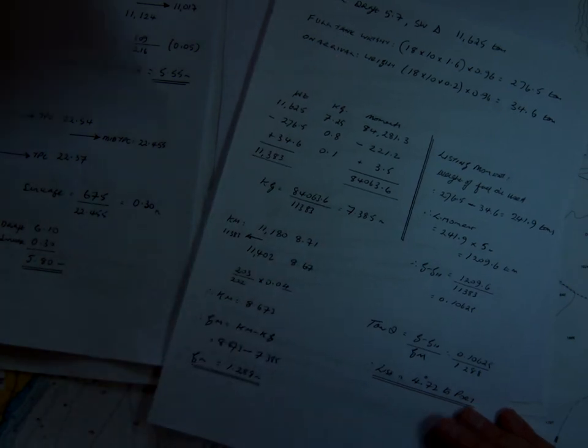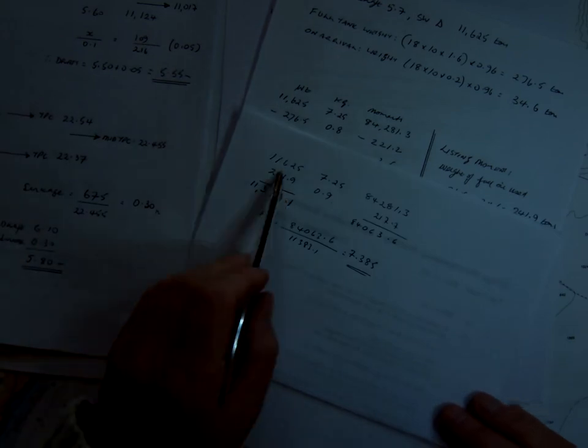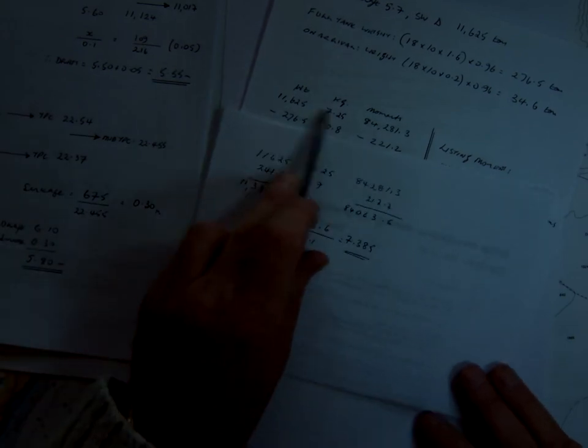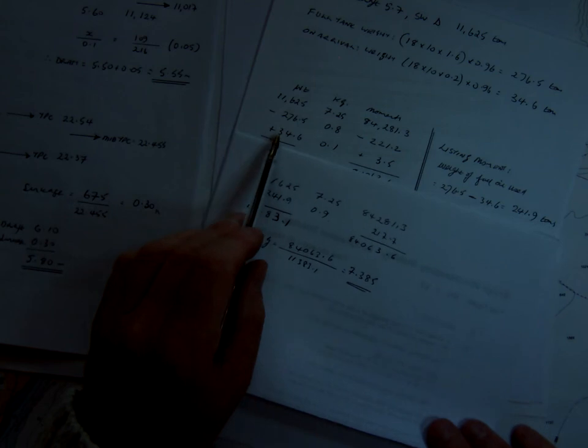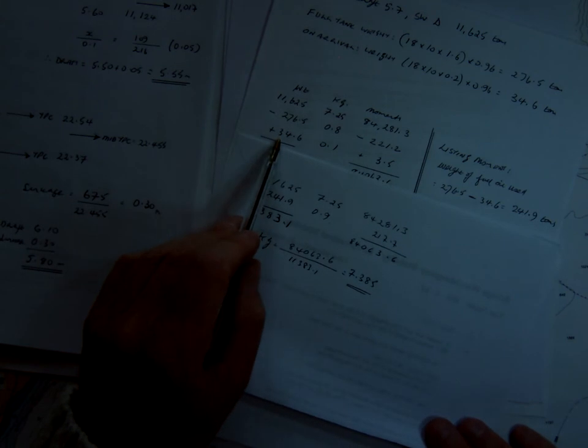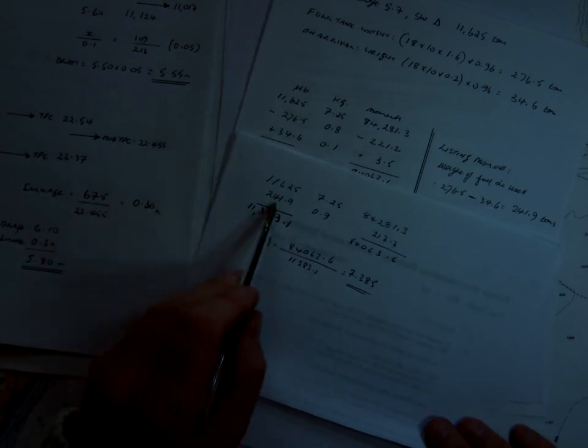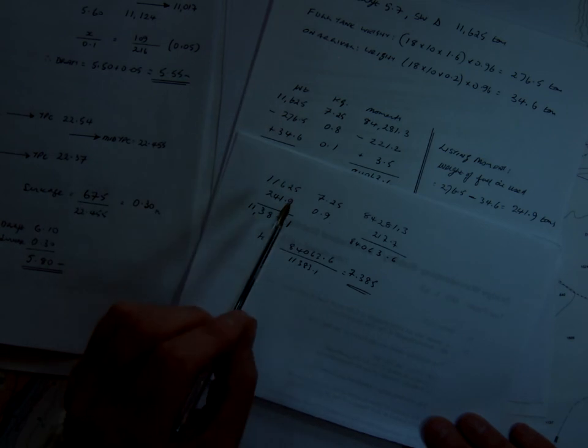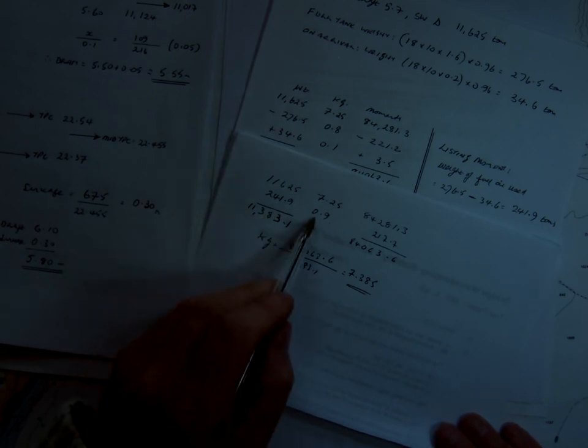The other way we could do this, to get the KG, we could say, okay, that's our displacement, just like we've done above in this problem. But instead of doing 276 and 34.6, we could say, okay, that's what we've actually used up, 241.9, the difference between the two. Now the KG of this, it's going to be 0.9, because when you've got the full tank,